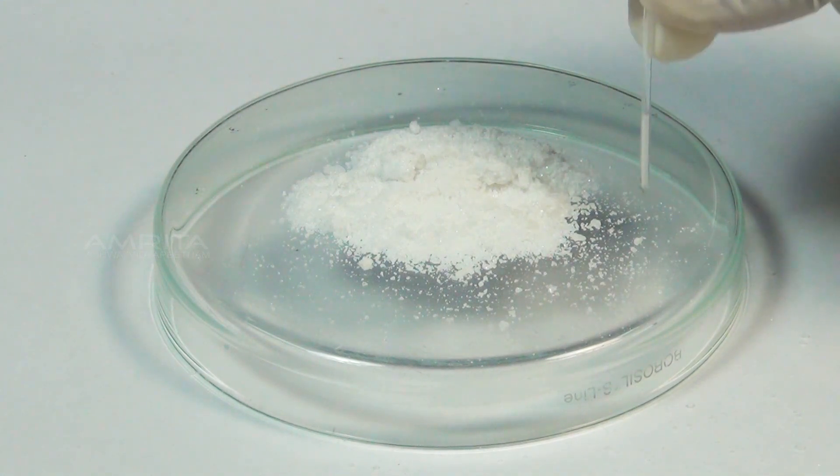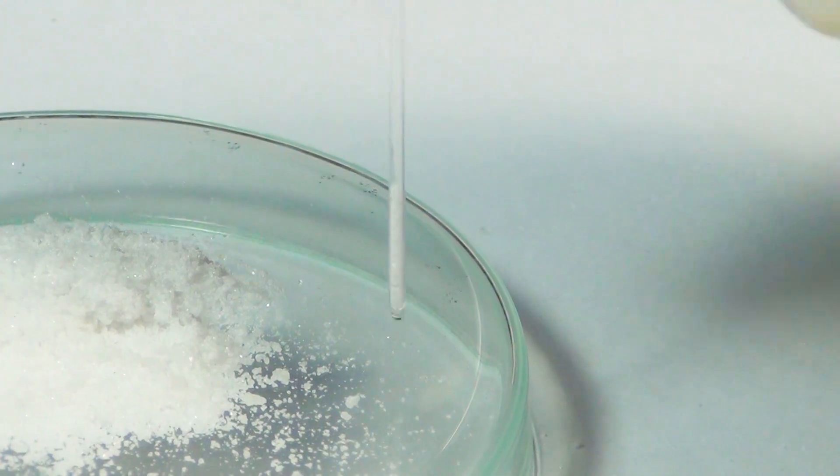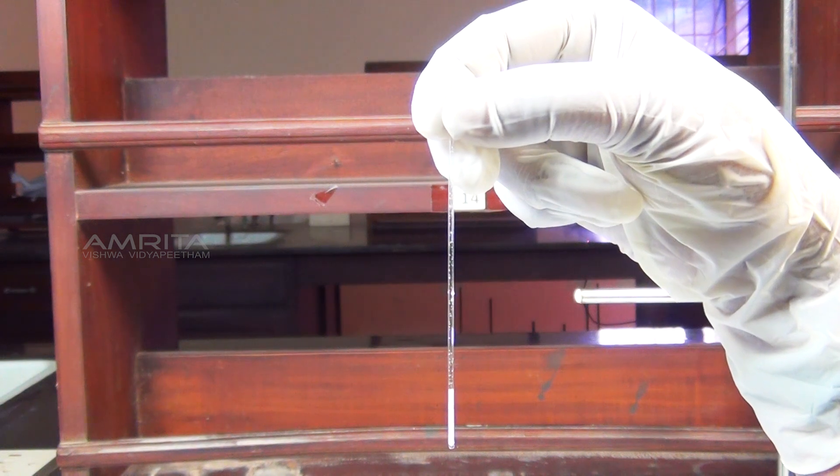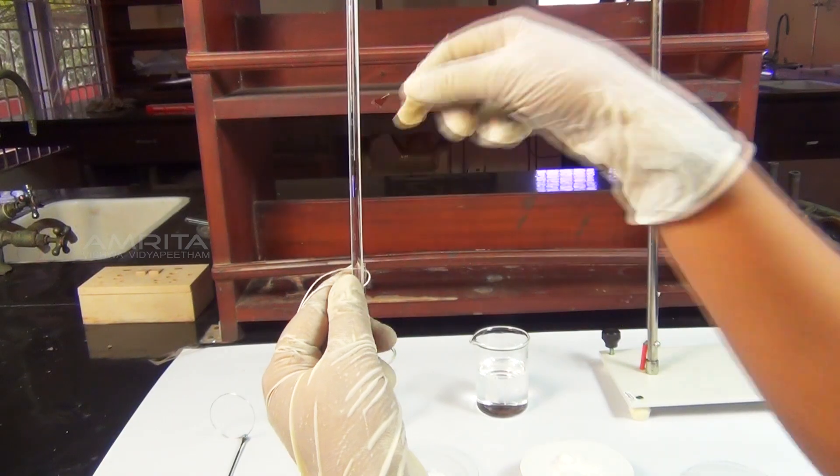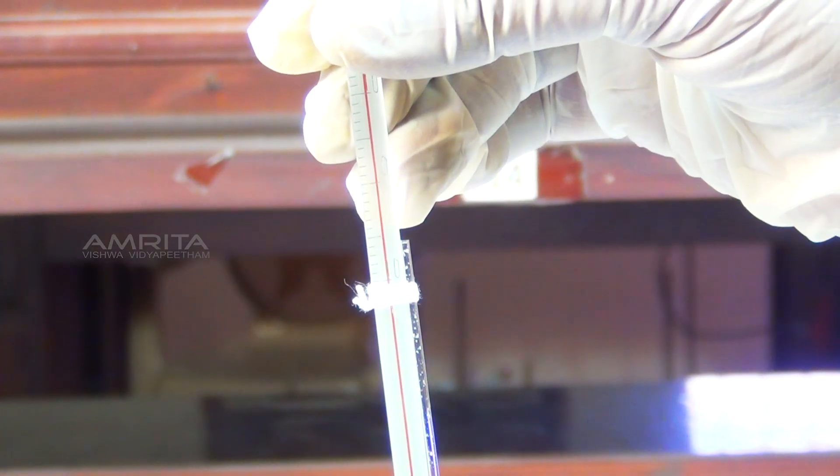Now, tap the sealed end of the capillary tube on the glass plate gently and fill the capillary tube up to 2-3mm. Attach the capillary tube to the thermometer using the thread.